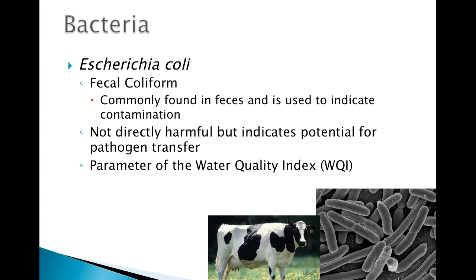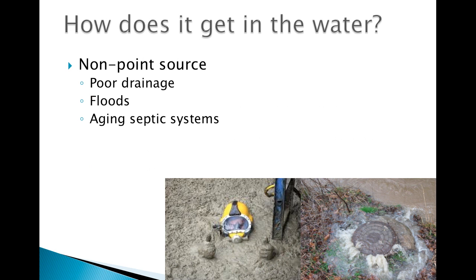The number of bacterial colonies after incubation is one parameter included as part of the water quality index. The water quality index is used by the state of Ohio to establish the quality of water for all water sources. Fecal coliform enters waterways mainly through non-point sources, including drainage from pastures, flooding that can overwhelm city wastewater facilities, and through aging septics.